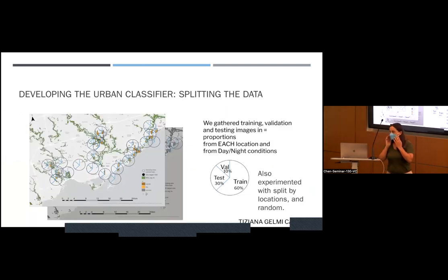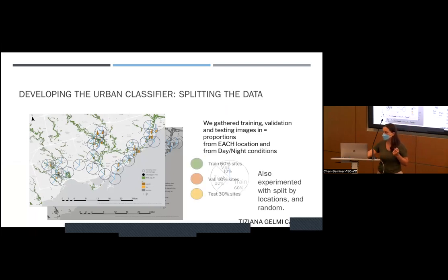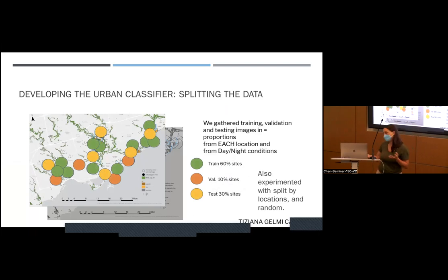Then we had to split the data. I tried three different things: one was getting training, testing, and validation from each of the sites; another was getting training, validation, and testing data from different sites. They all worked about the same — it didn't make a big difference in this case.